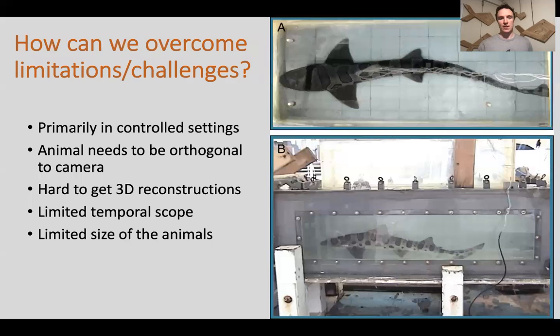However, there are a bunch of problems with using midlines. One of the biggest ones is to generate good midlines, you really need very controlled settings. Animals need to be orthogonal to a camera to get good 2D midlines, and you need two orthogonal cameras to get good 3D reconstructions. Because of this, it really limits the temporal scope of the work. By limiting the temporal scope, you're actually really limiting the diversity of midlines you might see, as well as the size of animals because you're often trying to swim animals in these controlled flumes where you can get good orthogonal images.